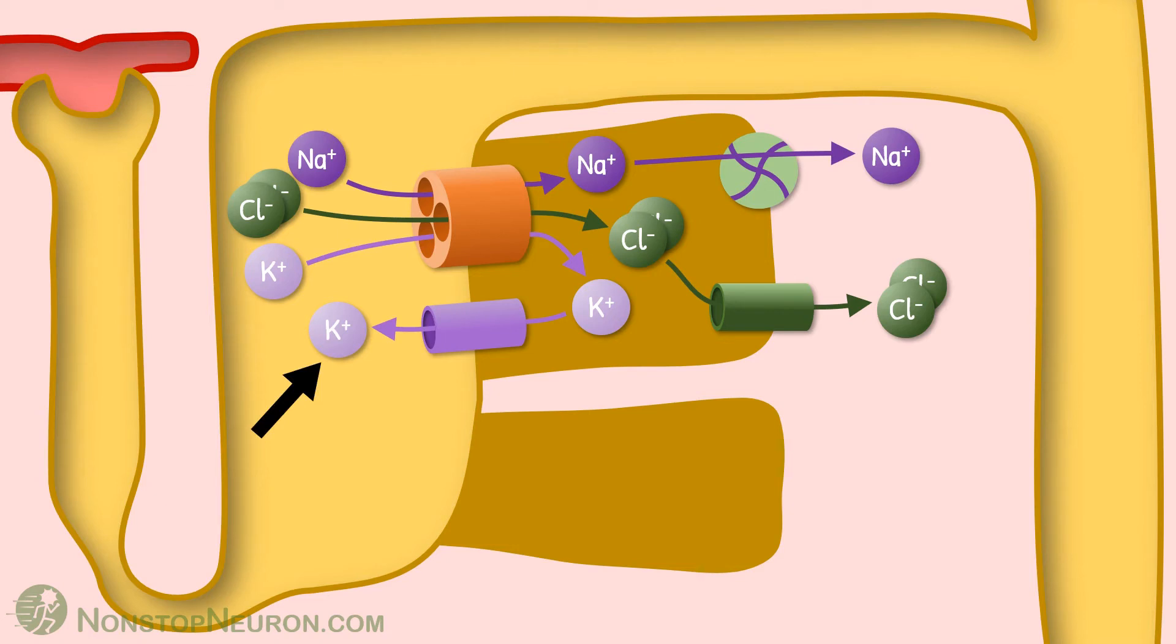See, positively charged potassium ions are moving into the lumen, and negatively charged chloride ions are moving into the interstitium. This makes lumen electropositive with respect to interstitium.